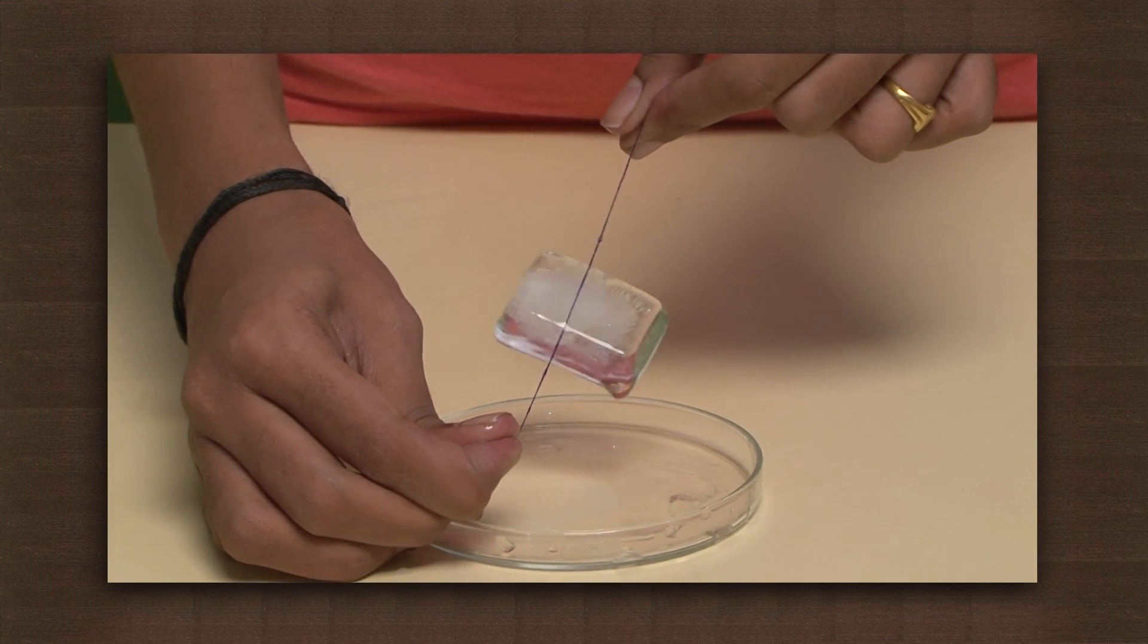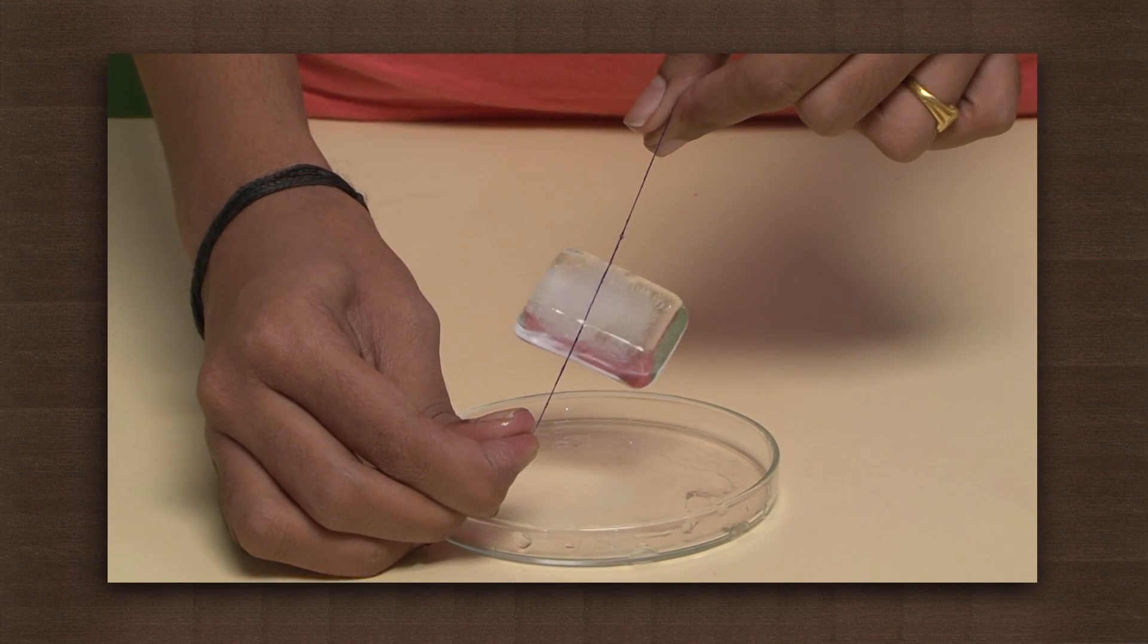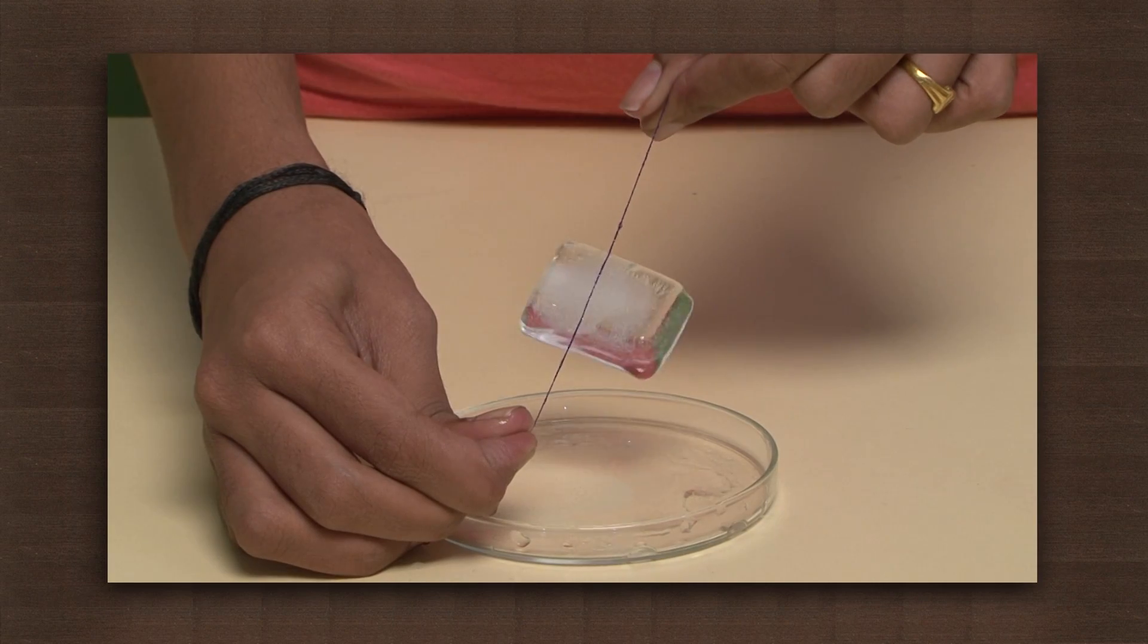This is because the thread sinks into the ice and the ice reforms on top. This is essentially due to regelation, but other factors such as the transfer of heat and tension in the string also play their part.